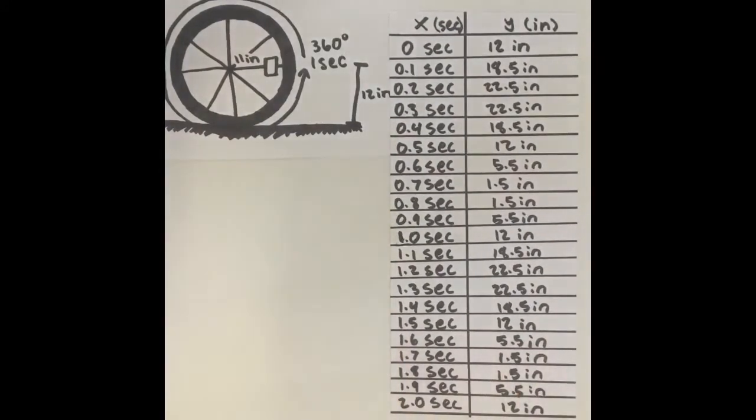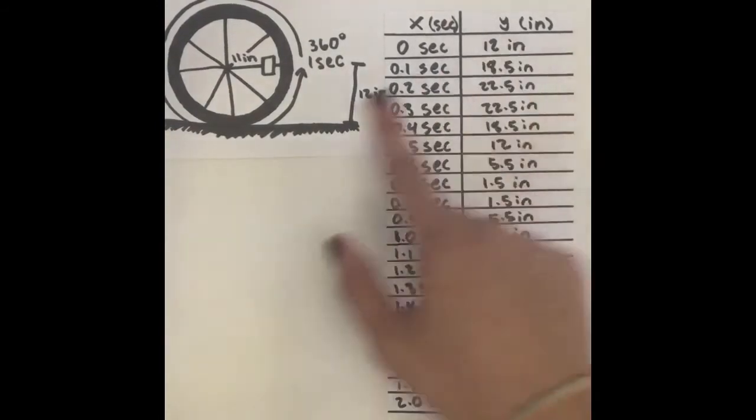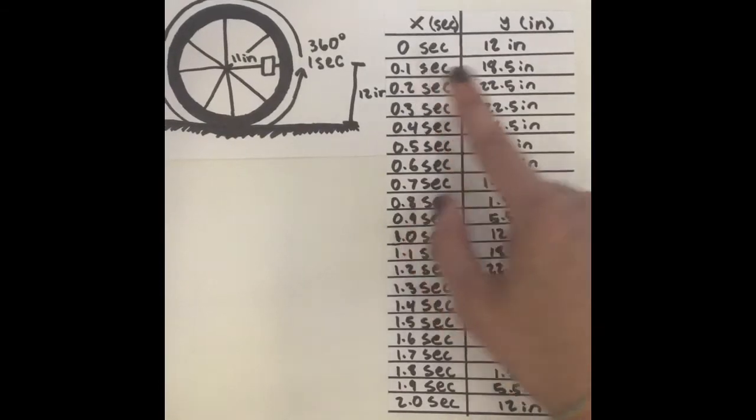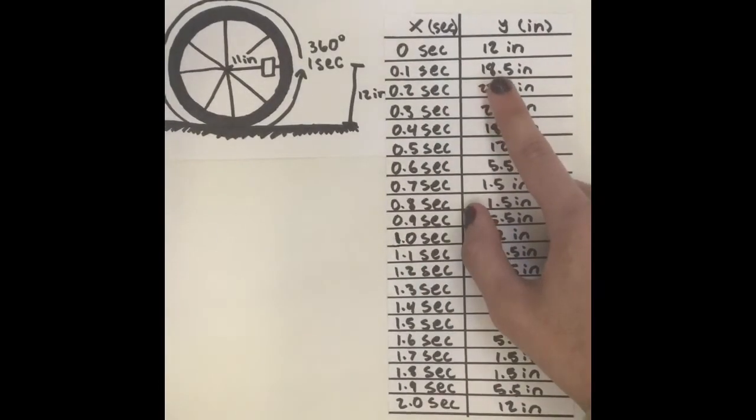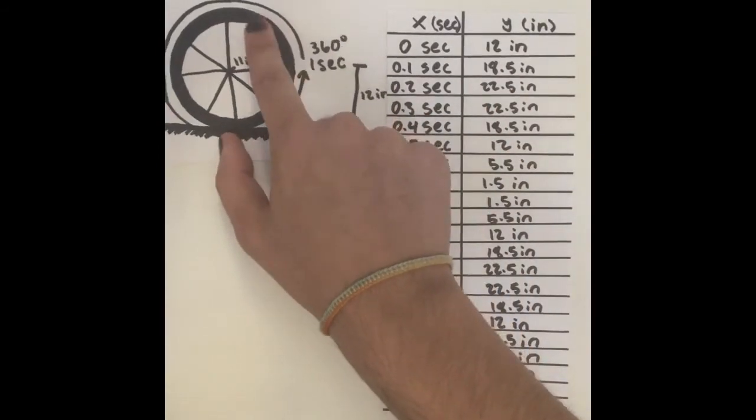At zero seconds, the reflector has not moved at all and is therefore still at 12 inches since it began at the three o'clock position. At 0.1 seconds, the reflector is at 18.5 inches, meaning it has moved up and is now in this general area.